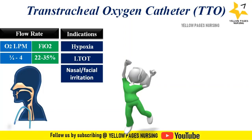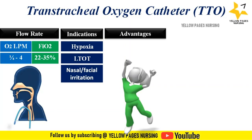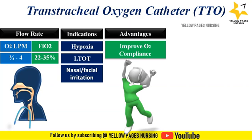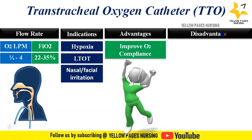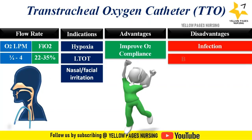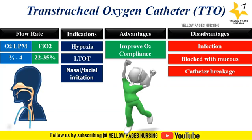Indications for transtracheal oxygen catheter include hypoxia requiring long-term oxygen therapy, and for patients who have nasal or facial irritation where an oxygen mask cannot be used. Advantages include that it improves oxygen compliance by reducing total oxygen usage by 50 to 70%. Disadvantages include risk of infection, blockage with mucus, and chance for the catheter to break.